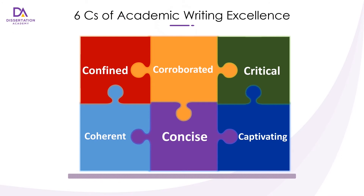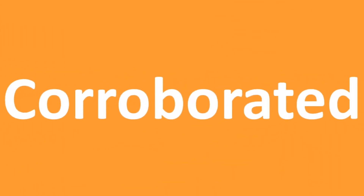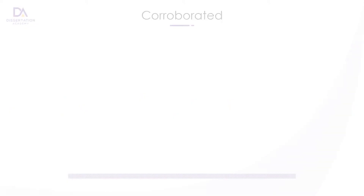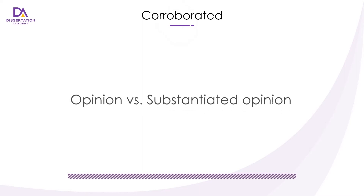Let's move to the second C: corroborated. One of the critical elements in writing a good dissertation is the ability to produce strong arguments. This means that whatever you say needs to be confirmed or supported by appropriate evidence. I often say to my students that I'm not interested in their opinion — I'm interested in their substantiated opinion.